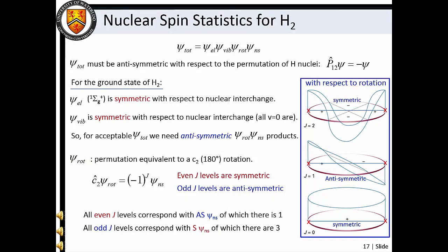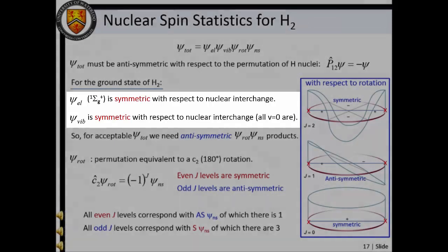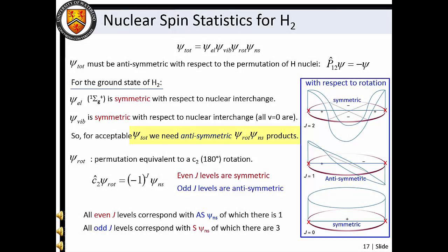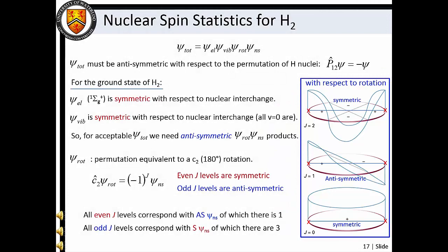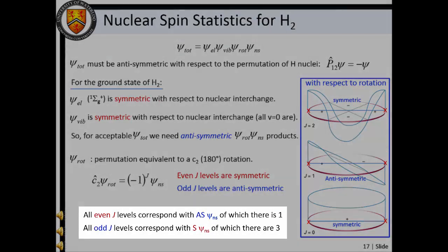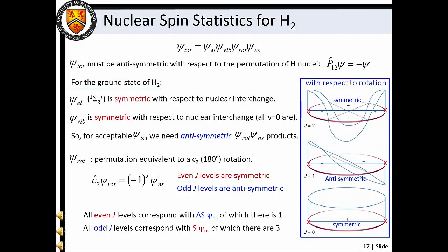Since we are concerned with the exchange of fermions, the total wave function must be anti-symmetric with respect to permutation of the hydrogen nuclei. However, the H₂ ground state electronic and vibrational wave functions are totally symmetric. Therefore, the product of the rotational and nuclear spin wave functions must be anti-symmetric. A closer examination of the rotational wave functions shows that even J levels are symmetric upon 180° rotation, whereas odd J levels are anti-symmetric. Thus, to satisfy the Pauli exclusion principle, even J wave functions must be paired with anti-symmetric nuclear spin wave functions, and odd J wave functions must be paired with symmetric nuclear spin wave functions. As a result, for H₂, odd J rotational energy levels have three times the statistical weight of even J levels, and rotational transitions originating from odd J levels have three times the intensity of transitions originating from even J levels.